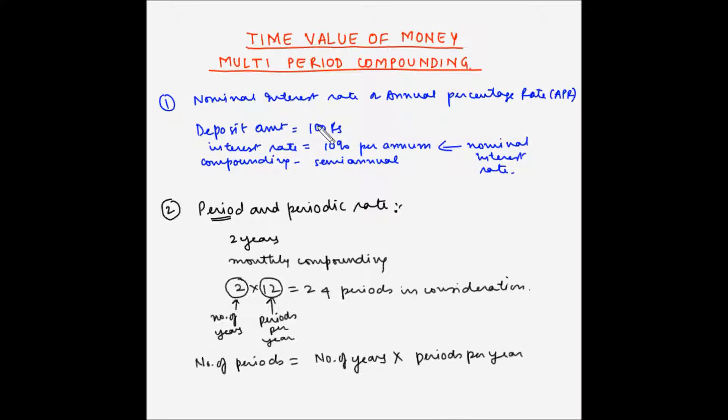Now, in our example number 1, if this deposit is being done for 1 year, then the number of periods is equal to, so this is 1 year and since the compounding is happening semi-annually, so in 1 year there are 2 periods, so 1 into 2, so 2 periods.